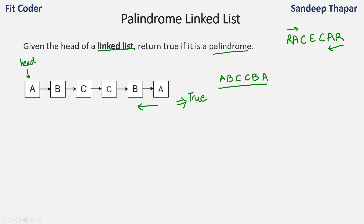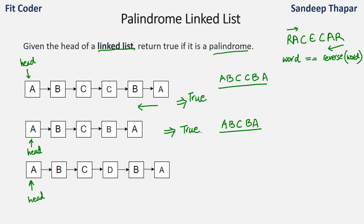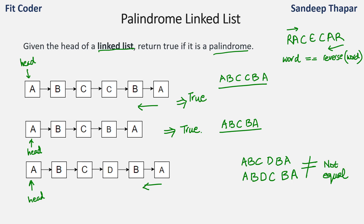Let's take one more example. Here the linked list is a, b, c, b, a, and if we reverse the linked list it again becomes a, b, c, b, a, so this is also a palindrome. In the third example the linked list is a, b, c, d, b, a, and the reverse gives us a, b, d, c, b, a. These two are not equal, so this linked list is not a palindrome and we need to return false.